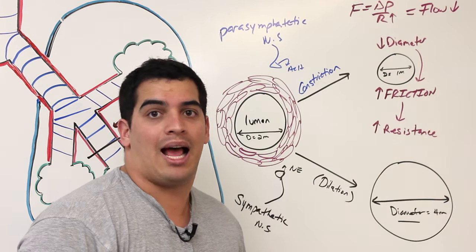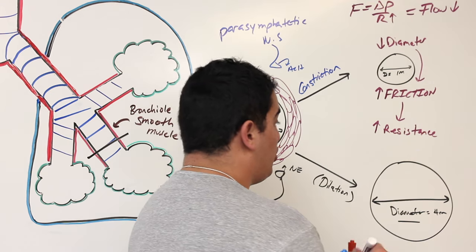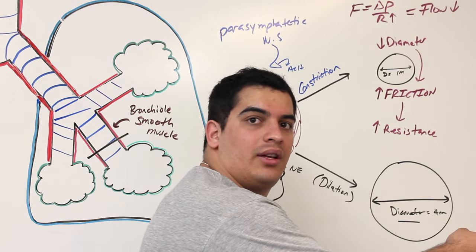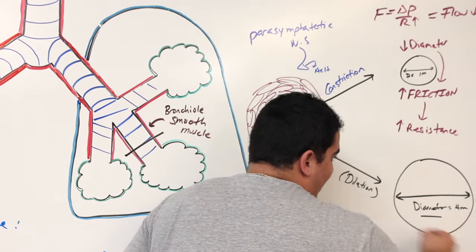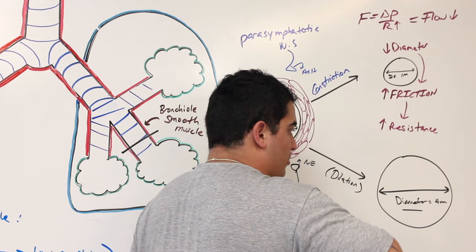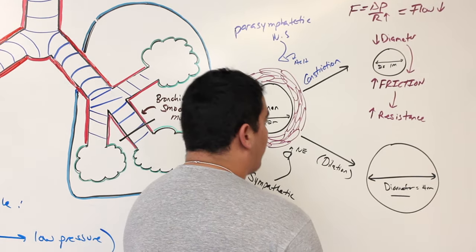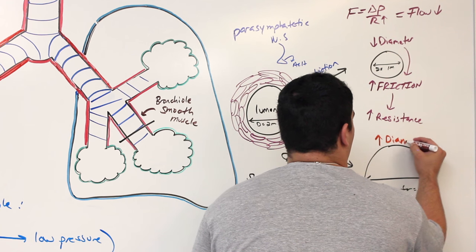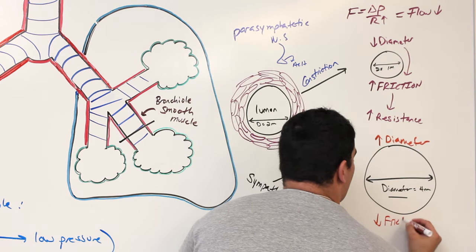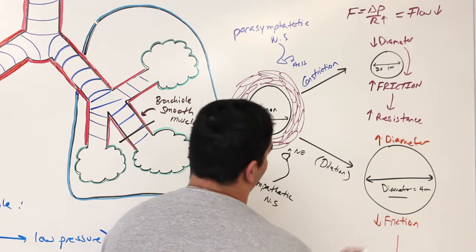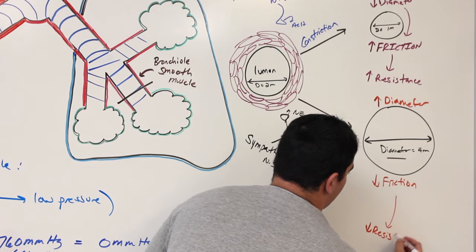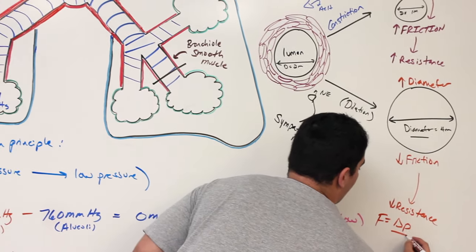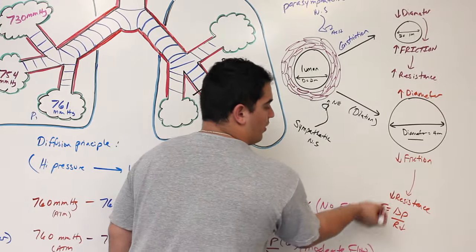The exact opposite happens when you dilate the bronchi so more air can come in. There won't be a lot of friction between the air and the pseudostratified ciliated columnar epithelial lining. So friction decreases because of the increase in diameter, which decreases resistance. And since flow = ΔP / R, if you decrease resistance, flow will go up.